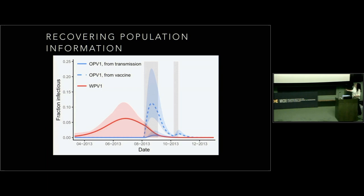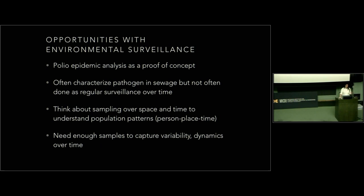Here's the model fit to the data, including the vaccine virus in sewage. Looking at the profile likelihoods, we can recover the fraction of the population that was infectious at any given time. There's a lot of uncertainty, but you can get some information. This ends up showing that once you integrate the cumulative incidence, over 50% of the population at risk may have been shedding poliovirus at one time or another. Population at risk is a key phrase here — that doesn't mean the entire population. This was a proof of concept for doing modeling work with environmental surveillance data, and we think we can do a lot more with this.